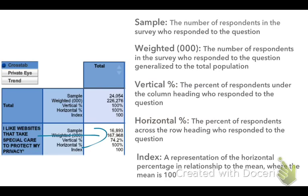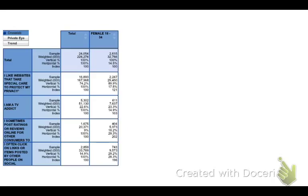The final number to understand is the index. An index number looks at a percentage in relation to the average, with the average being represented as 100. Any characteristic that is greater than the average will be greater than 100, and any characteristic that is less than the average will be less than 100. Let's take a look at the larger crosstab to see how this all plays out.